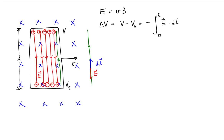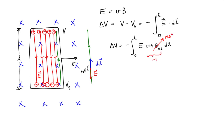We can represent the dot product between the two as being equal to the magnitude of the electric field, times the cosine of the angle between the electric field and our displacement vector along the line of integration, times the magnitude of our displacement vector. Notice the angle between the displacement vector and the electric field — the angle between the two is 180 degrees.